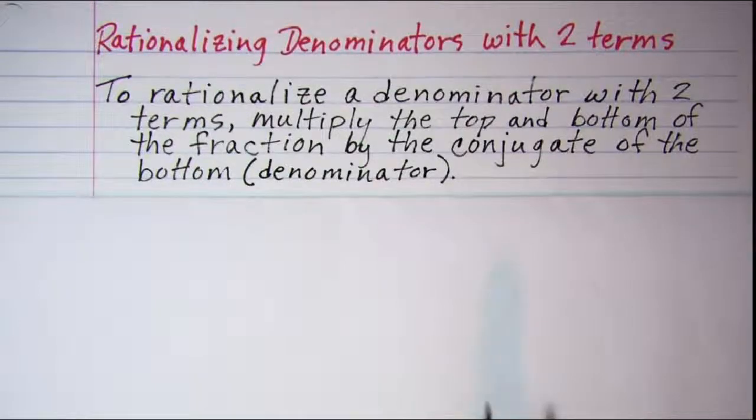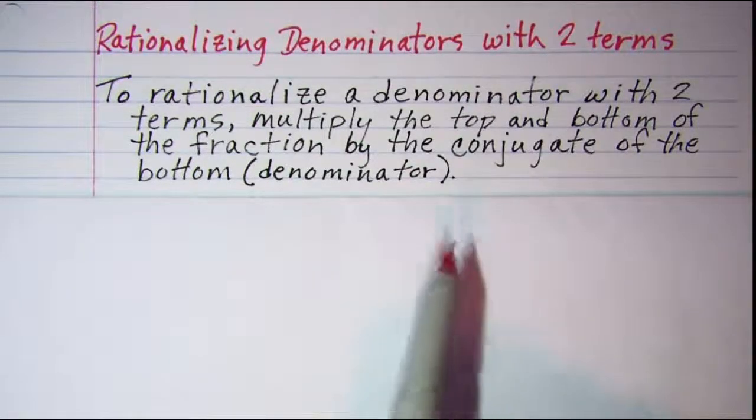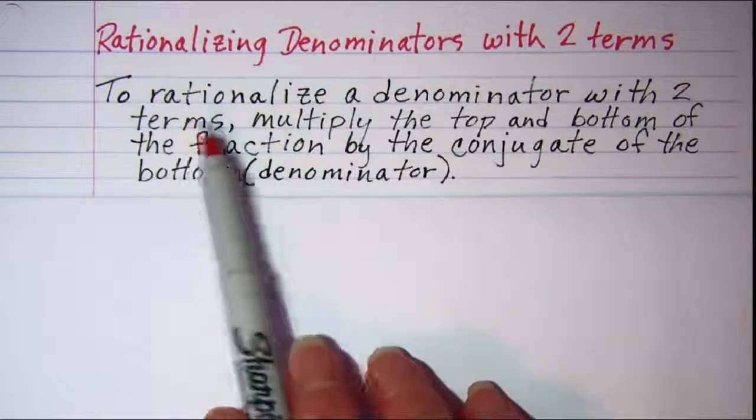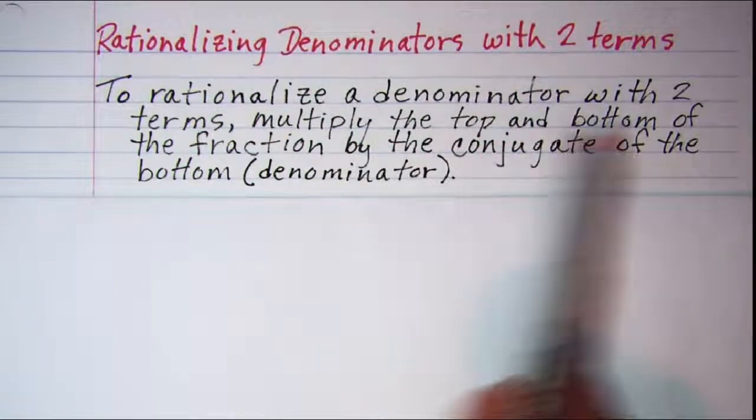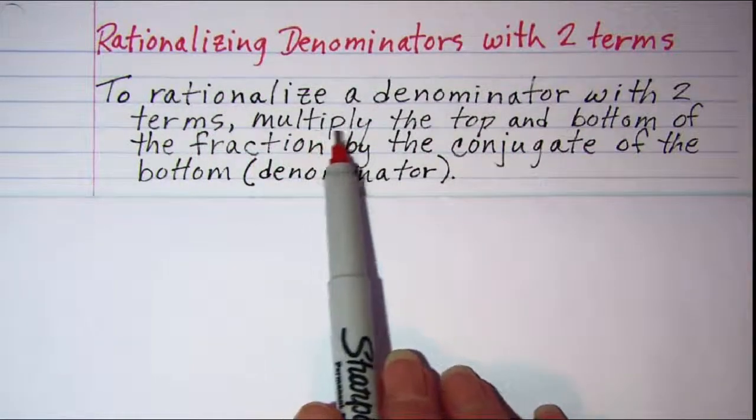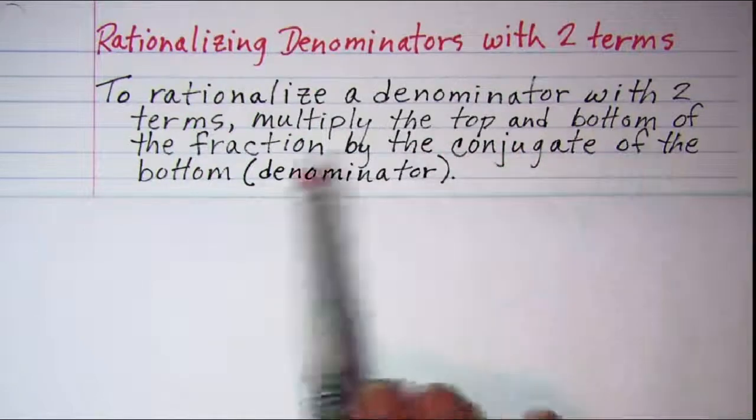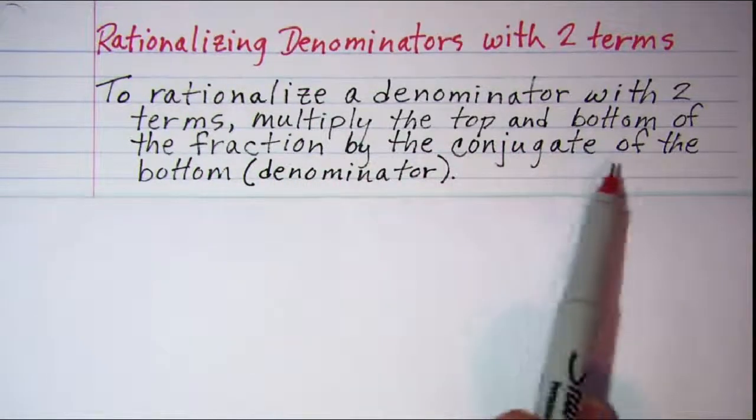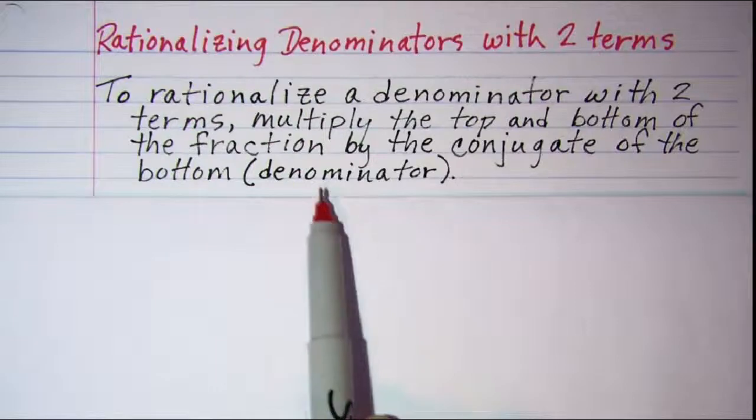In this video, we'll be rationalizing denominators with two terms. To rationalize a denominator with two terms, multiply the top and the bottom of the fraction by the conjugate of the bottom or the denominator.